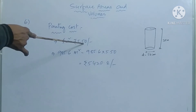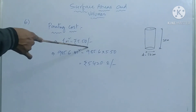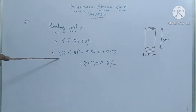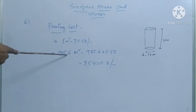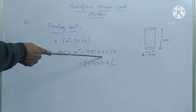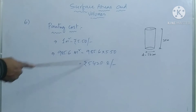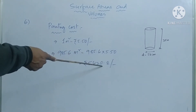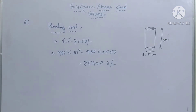Painting cost for 1 meter square is 5.50 rupees. Total curved surface area of 16 pillars is 985.6 meter square. So total painting cost equals 985.6 into 5.50 rupees, giving the final total painting cost of 16 pillars.